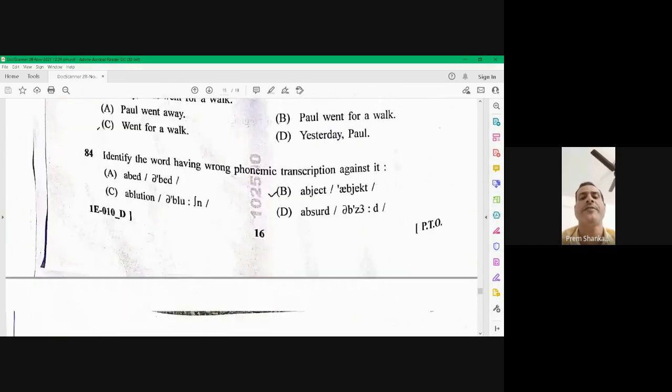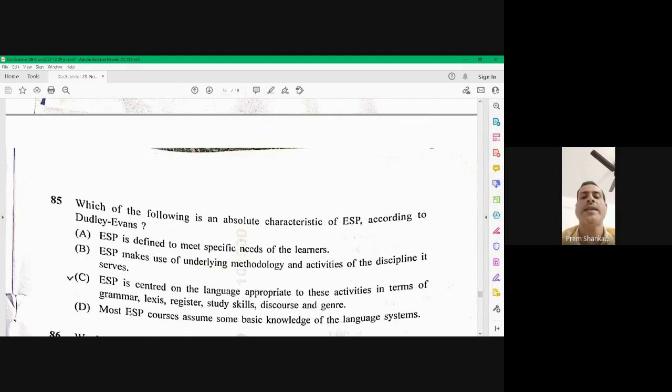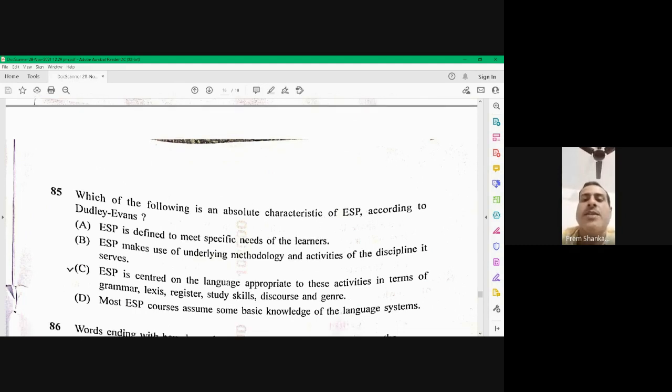Question number 85. Which is the following is an absolute characteristics of English for a specific purpose according to duty events. Here 85 C is the right option. ESP is created on the language appropriate to these activities in terms of grammar, access, register, study, skills, discourse and genre.